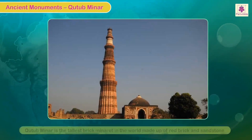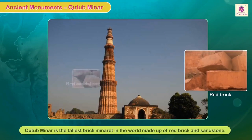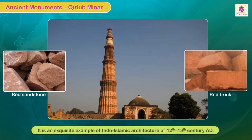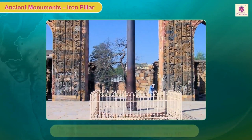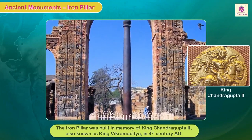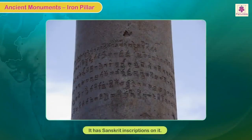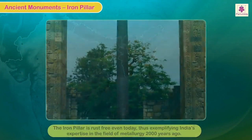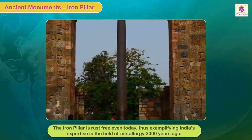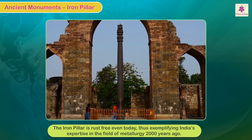The Qutb Minar is the tallest brick minaret in the world. Built exclusively in red brick and sandstone, it is an exquisite example of Indo-Islamic architecture of the 12th and 13th century AD. The Iron Pillar was built in memory of King Chandragupta II, also known as King Vikramaditya, in the 4th century AD. It has Sanskrit inscriptions on it and is rust-free even today, exemplifying India's expertise in metallurgy 2000 years ago.